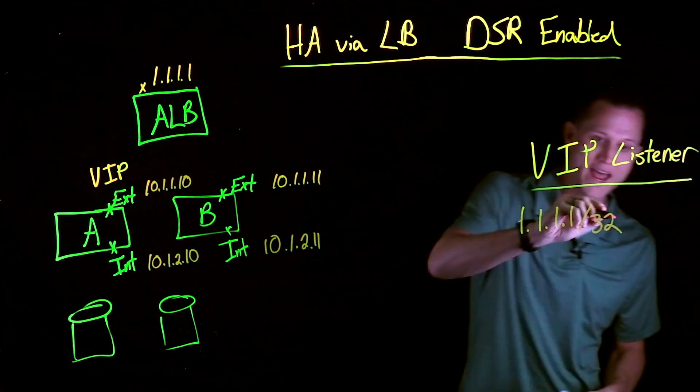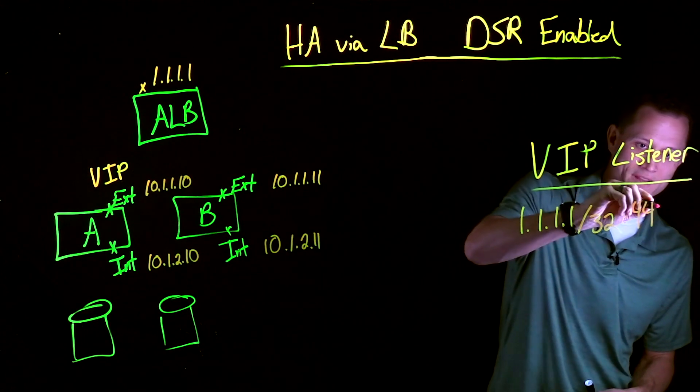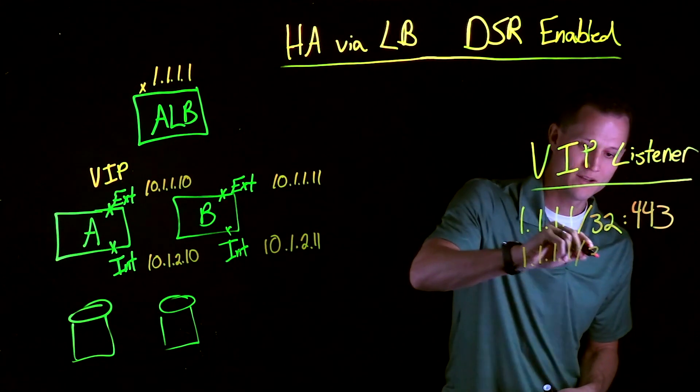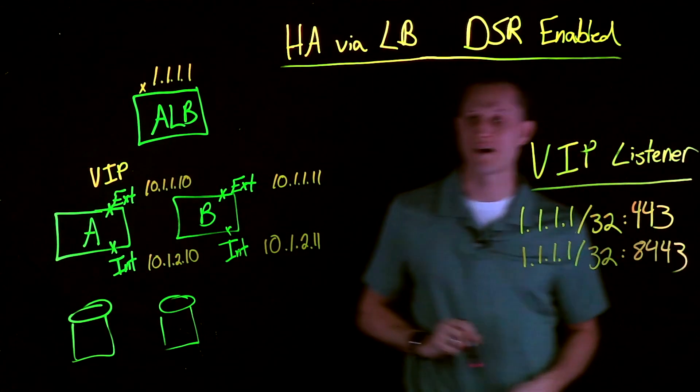Now, for app A, app B, if you've seen previous videos, you know that you can separate these out by ports. So, we can do the same thing here. Maybe your next app is 8443, and so on.